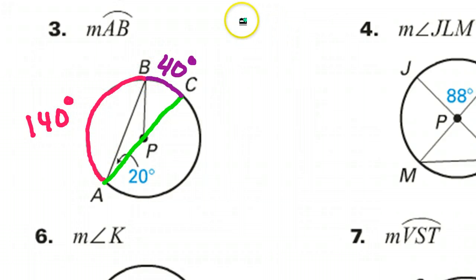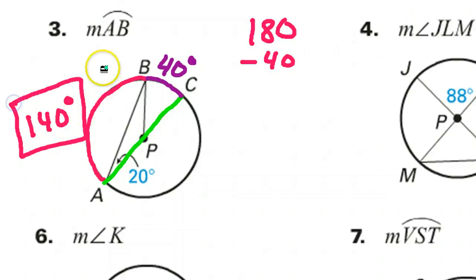You said it. This has to be 140 degrees. Technically, I'm doing 180 minus 40, but I'm sure you can just do that in your head. 140 plus 40 adds up to 180. And that's what we were supposed to find, the pink arc of AB.